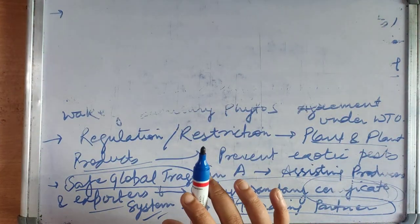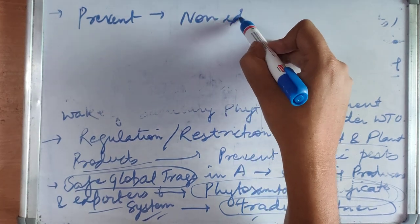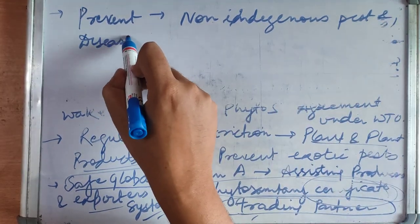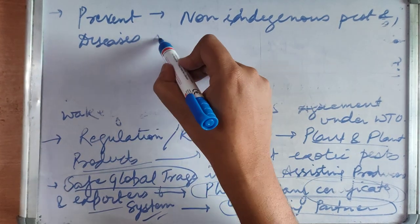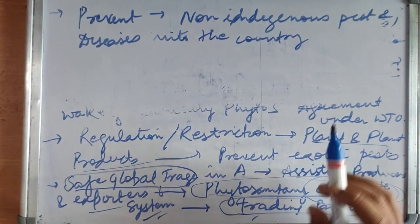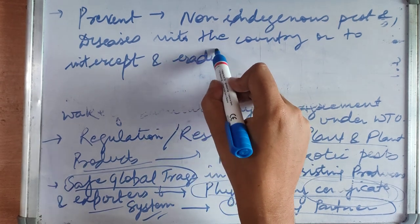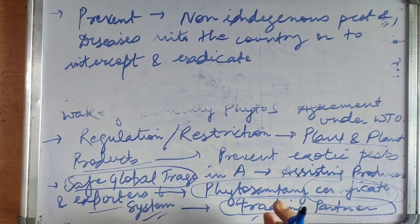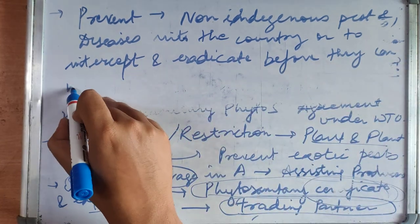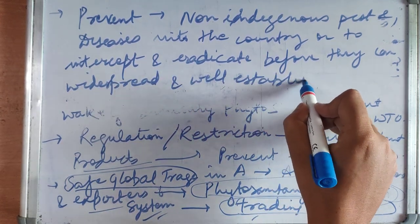There is one more role: to prevent introduction of non-indigenous, that is exotic, pests and diseases into the country, or to intercept and eradicate them before they can become widespread and well established. So we need to first prevent and then eradicate before they are well established.